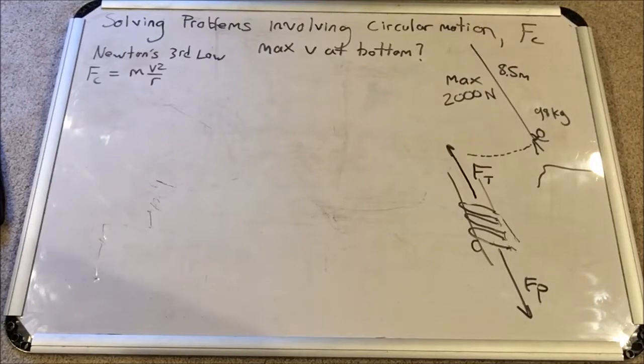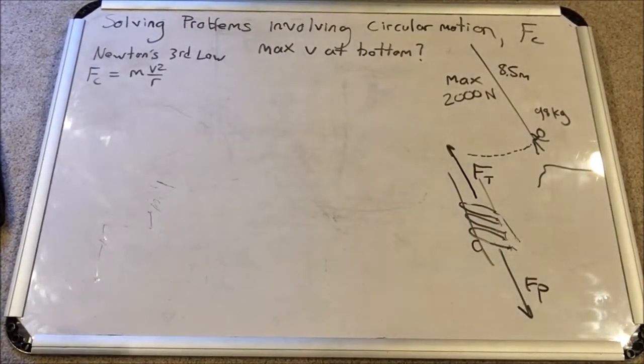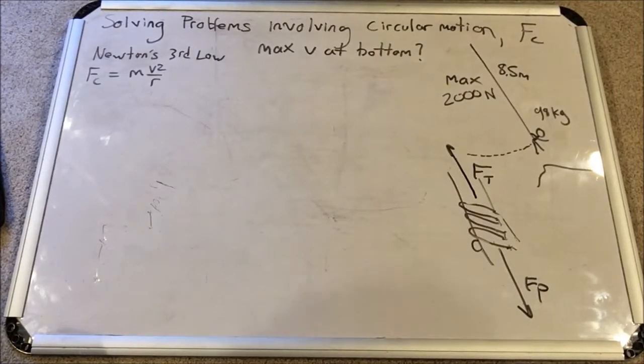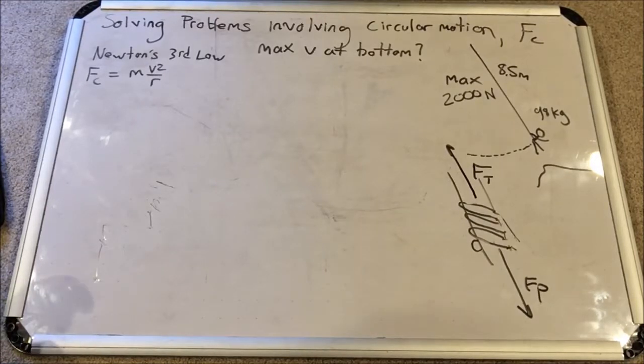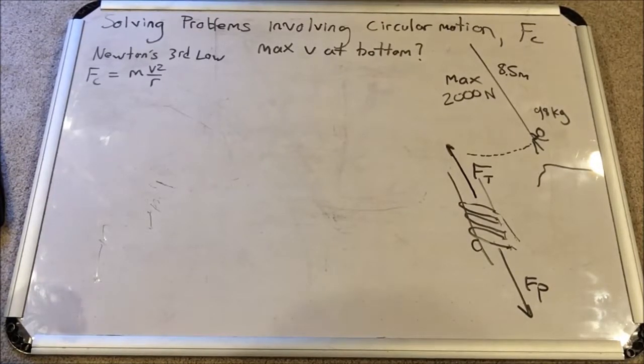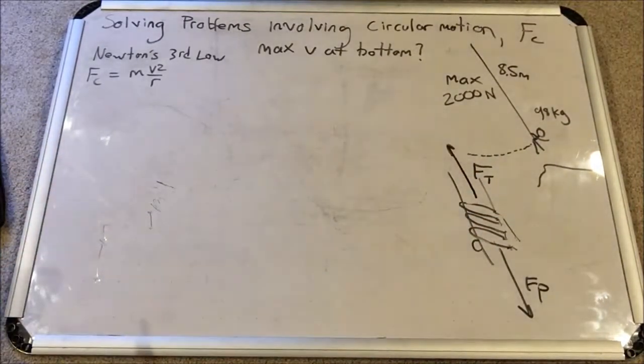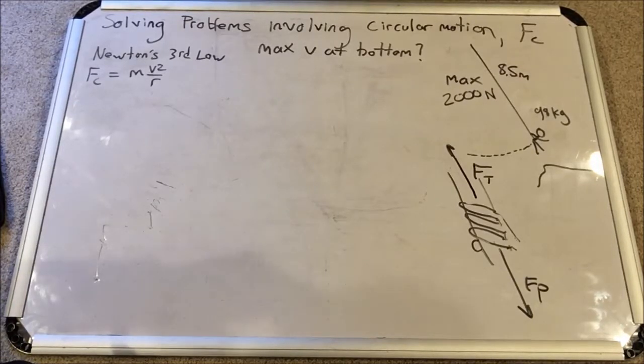And this problem involves Tarzan over here and he is swinging on a rope over a ravine. The rope is 8.5 meters long, his mass is 98 kilograms, and we're told he could pull on that rope to stay on the rope with a maximum force of 2,000 newtons. The problem asks us, at the bottom of his trajectory here, this partial circular trajectory, what is the maximum speed he could tolerate being able to pull with that force?